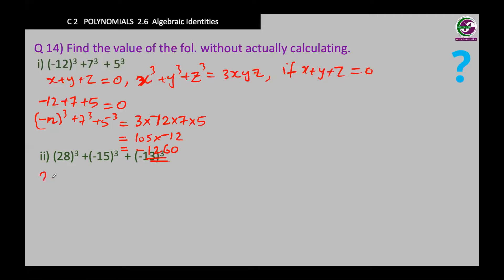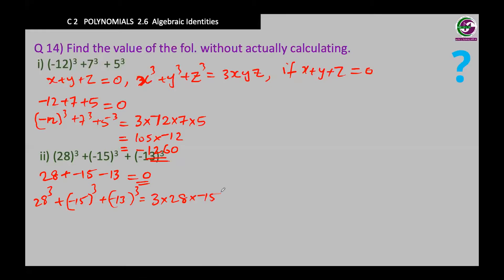Part 2: again we have 3 terms. Let's check: negative 15 minus 13 plus 28 equals 0. Yes! So 28 cubed plus negative 15 cubed plus negative 13 cubed equals 3 times 28 times negative 15 times negative 13. The sign is positive because we have two negative signs. Multiplying all the numbers gives us 16,380.